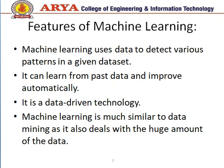Features of machine learning: machine learning uses data to detect various patterns in a given dataset. When we provide a huge amount of data to the machine, it detects various patterns and can learn from past data and improve automatically. Machine learning is a data-driven technology and is much more similar to data mining, because the more data we use, the more efficient and accurate our output will be.